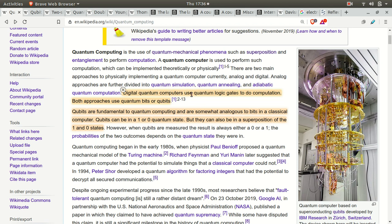Digital quantum computers use quantum logic gates to do computation. Both digital and analog approaches use qubits, a.k.a. quantum bits. Qubits are the fundamental quantum computing piece and are somewhat analogous to the bits in a classical computer. Qubits can be in a 1 or a 0 quantum state, but they can also be in a superposition of the 1 and 0 states. So in our classical computer, our bits are 0, 1, which corresponds to the voltage of the electricity going through.